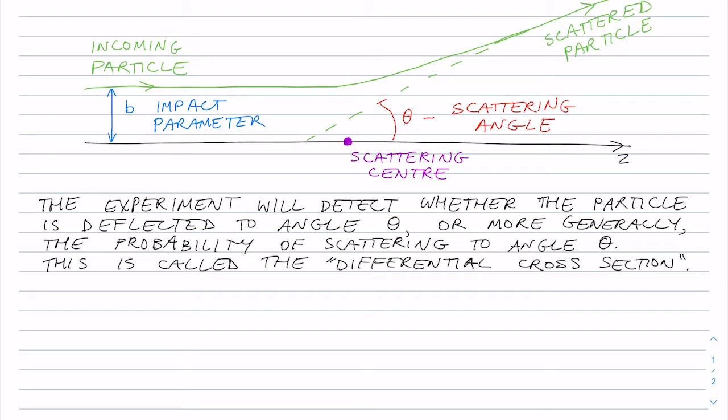So in a general experiment, what you're going to have is a bunch of incoming particles, and some of them will get scattered at various angles. And that probability of scattering, or the amount of flux that gets scattered to an angle theta, is called the differential cross-section.